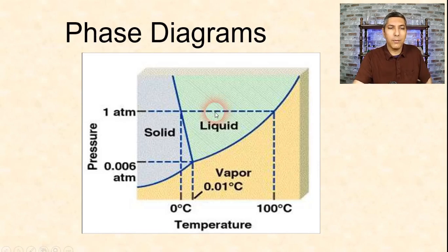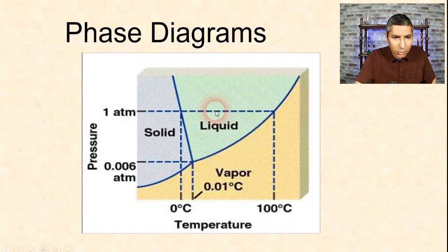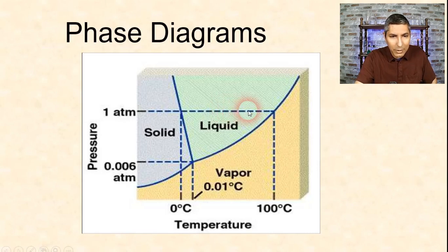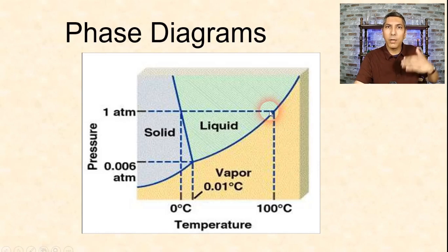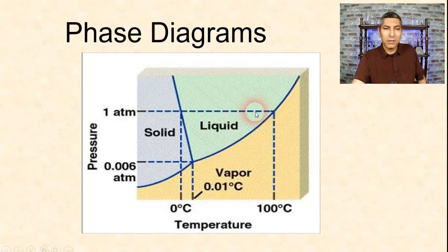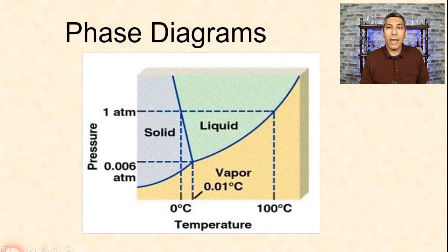If we take water at one atmosphere and 20°C and start to heat it up, we move to the right along the x-axis at one atmosphere and can see that we cross the border from liquid into vapor at around 100°C. That's called boiling, or vaporization. So a phase diagram acts as a map that shows us the temperatures and pressures at which a substance will exist as a solid, a liquid, or a gas.